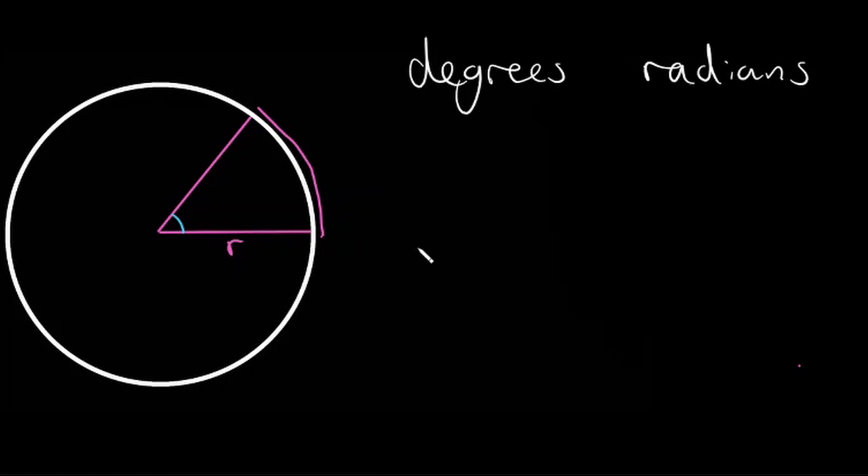So how many radians are in a circle? Because we know there's 360 degrees in a circle, so how many radians is there in one circle? Well if we're measuring an arc length, then what would be the arc length of an entire circle? Well it would be the circumference, so let's write that. Our circumference is going to be equal to 2 pi r.